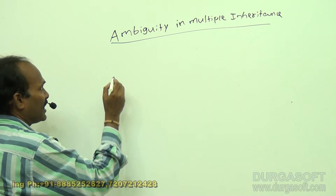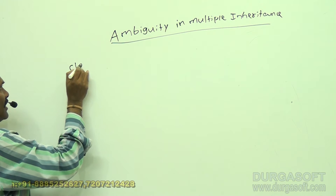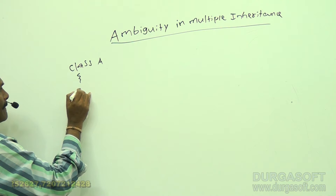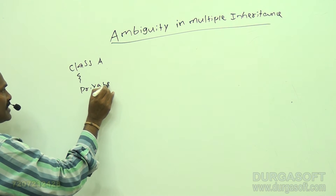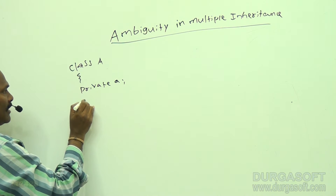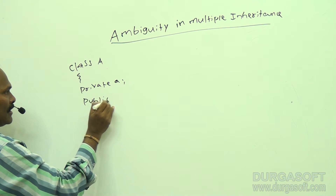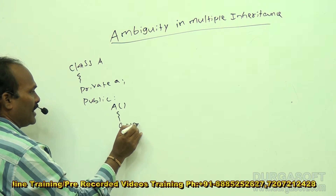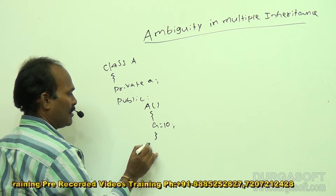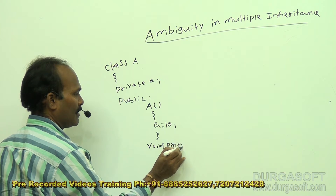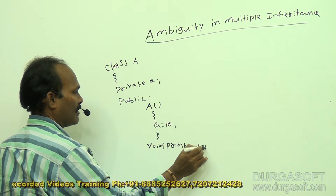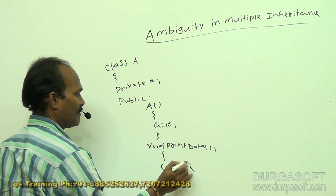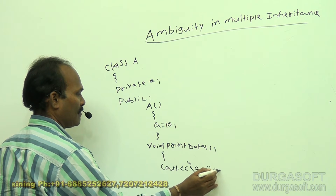Let me take a program to make this clear. I am defining one class called class A. Within class A, I am declaring a variable in the private section — private integer A. Within the public section, I am going to define a constructor whose duty is to assign a value: A equals 10. At the same time, I will define one method called print data, whose purpose is to print the value of A.